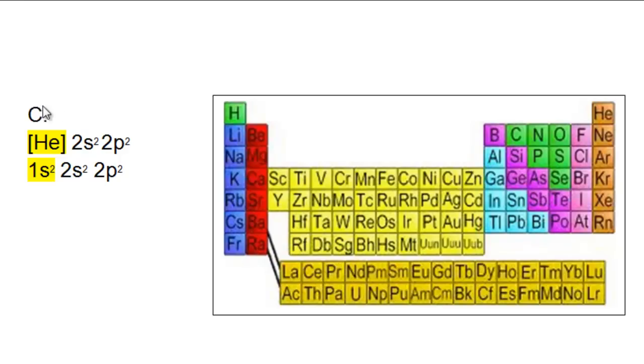Write the symbol for that noble gas, helium, in brackets. Then write the remainder of the electron configuration for the atom.